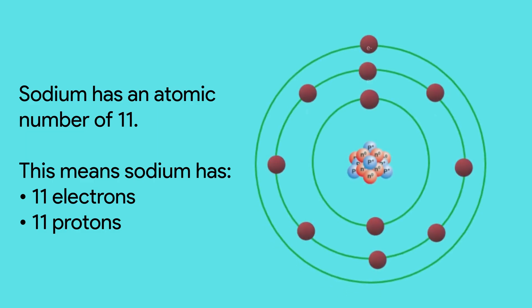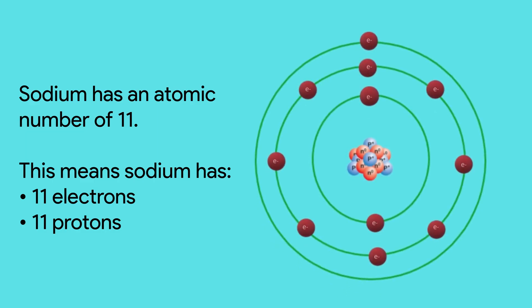Different elements have different numbers of subatomic particles. Sodium has 11 electrons, 11 protons, and 12 neutrons. The atomic number shows the number of electrons and protons in an atom that has a balanced state. This means sodium has an atomic number of 11.